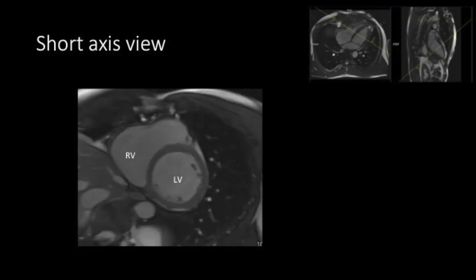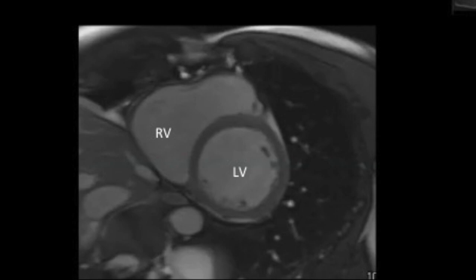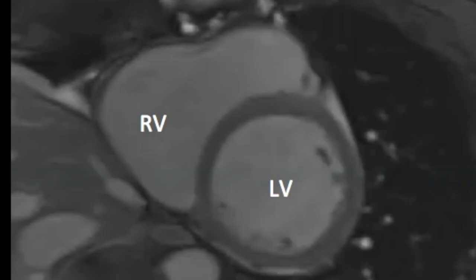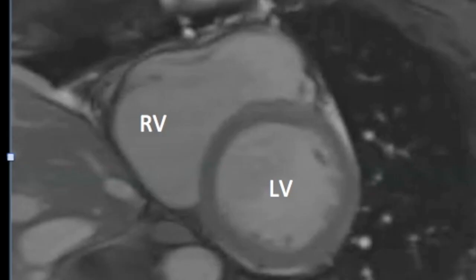Now the most important view is the short axis view which we obtain as a stack from base to apex to look at the LV wall thickness and the wall motion. The left ventricle again is seen as a complete circle with the myocardial lining which is thicker as compared to the right ventricle which is seen as half a circle. This is the short axis view.